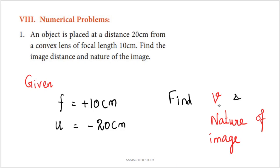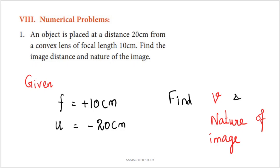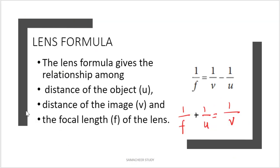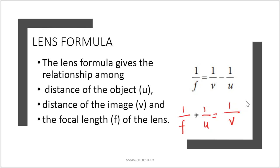Image distance is v. We use the lens formula to calculate image distance. The lens formula is: 1 by f equals 1 by v minus 1 by u.